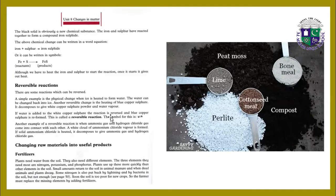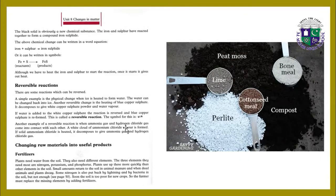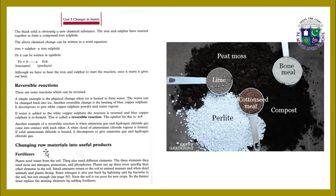If water is added to the white copper sulfate, the reaction is reversed and blue copper sulfate is reformed. This is called a reversible reaction. Another example of a reversible reaction is when ammonia gas and hydrogen chloride gas come into contact with each other — a white cloud of ammonium chloride vapor is formed. This leads us to the topic of changing raw materials into useful products.